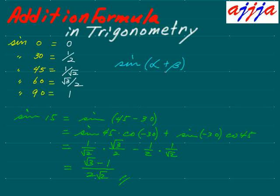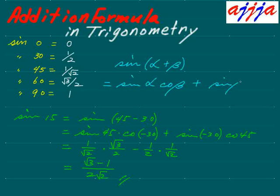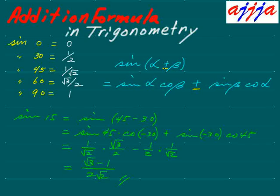Let's remember this one more time. Sine of alpha plus beta — the addition rule — means sine alpha times cosine beta, plus sine beta times cosine alpha. This is really, really important. Now, if you have subtraction — minus — then simply this middle term becomes minus, that's all. So: plus goes with plus, minus goes with minus. Sine alpha cosine beta, then sine beta cosine alpha — that's the only big change.